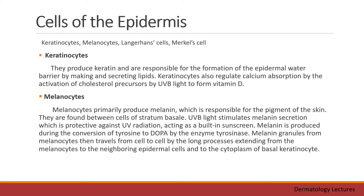Melanocytes are found between cells of the stratum basale. UVB light stimulates melanin secretion, which is protective against UV radiation, acting as a built-in sunscreen. Melanin is produced during the conversion of tyrosine to dopa by the enzyme tyrosinase. Melanin granules from melanocytes then travel from cell to cell via long processes extending from the melanocytes to the neighboring epidermal cells and to the cytoplasm of the basal keratinocyte.